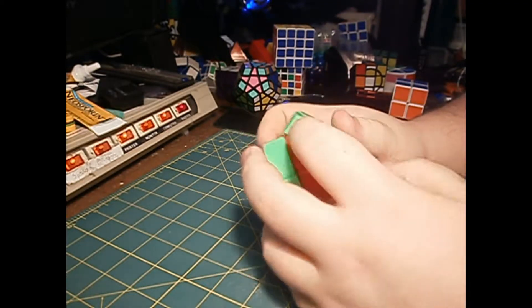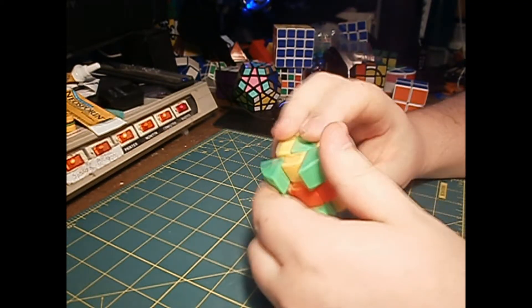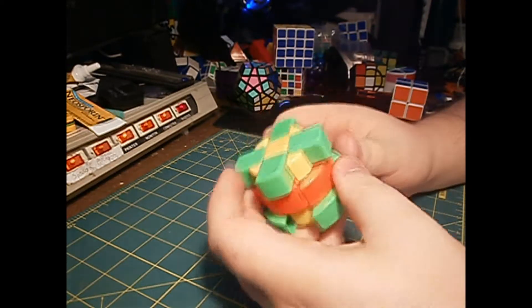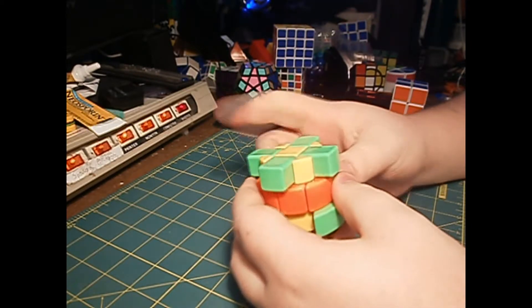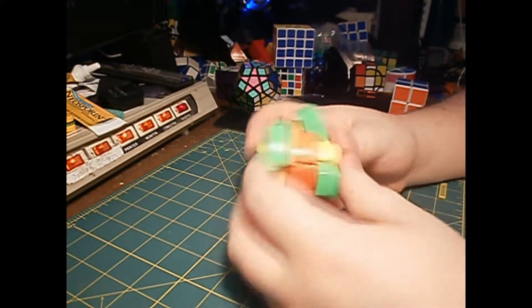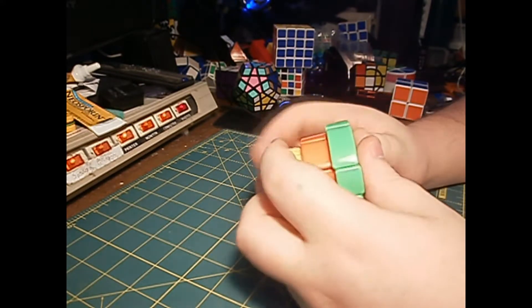It is a windmill cube or a cake cube. I think it's more commonly called the cake cube, but if you do the checkerboard pattern with it, it turns into the windmill.